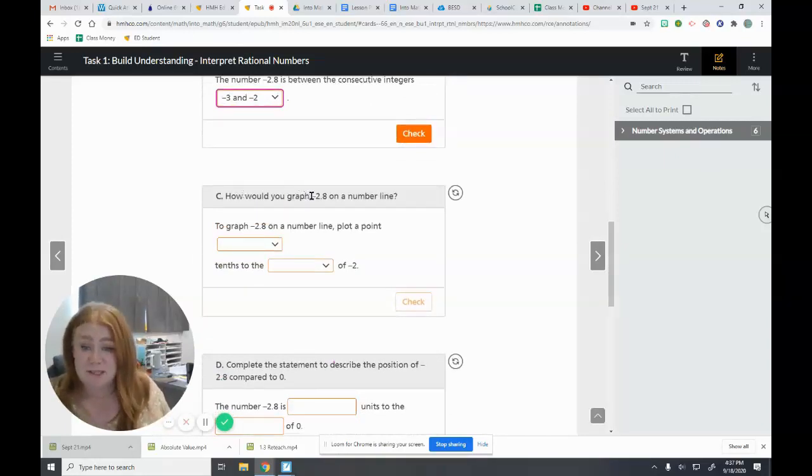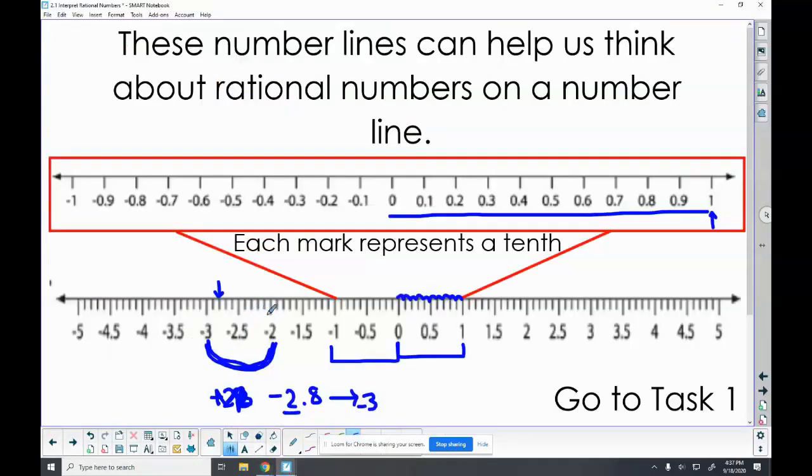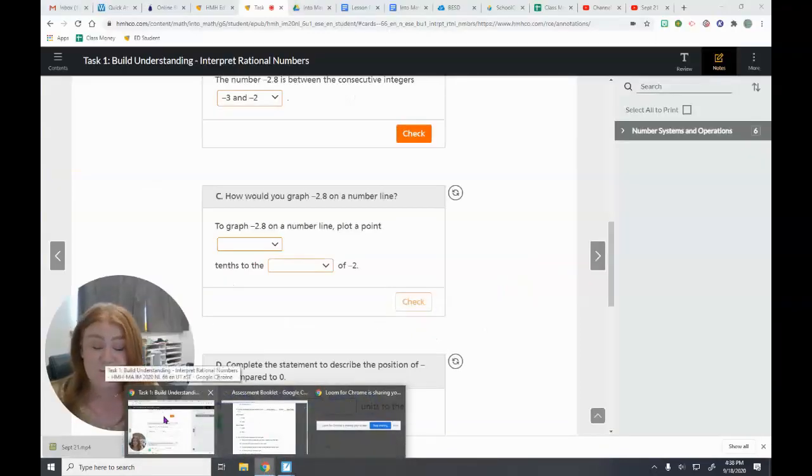So if I was wanting to graph negative 2.8 on a number line, I would plot a point blank tenths to the blank of two. Let's come back to our number line again. I know I need to go to the left starting at two: one, two, three, four, five, six, seven, eight tenths to the left of two. So if you need to draw yourself a number line, please do that. Or you can even search for number lines with tenths on them and print them out if you need to.